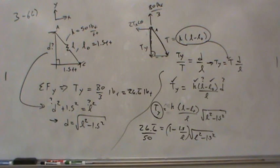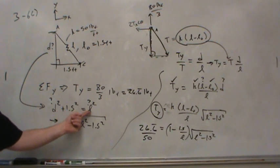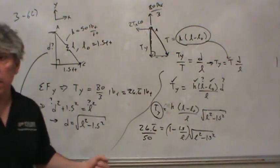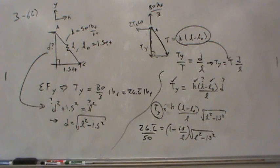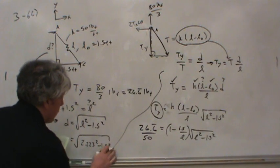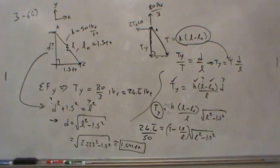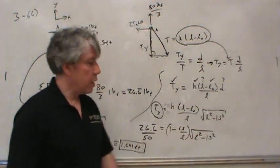We found L, but we want D. Plugging L ≈ 2.223 back into the Pythagorean relation: D = √(2.223² − 1.5²) ≈ 1.641 feet. That's how far down the bucket hangs due to the spring tension. Notice this is a nonlinear problem — that's what makes the solution more difficult.